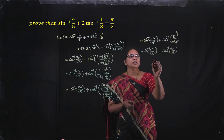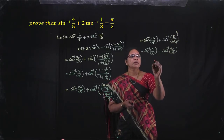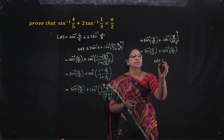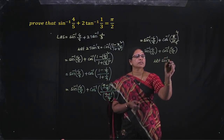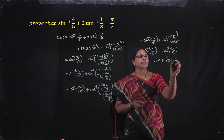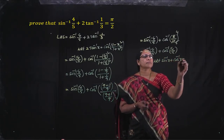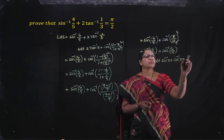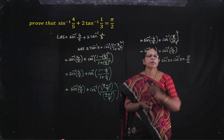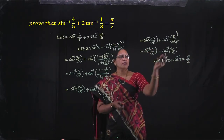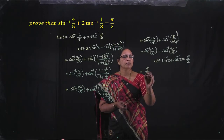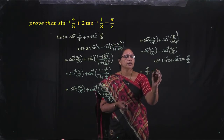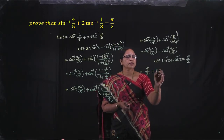We know the formula sin inverse x plus cos inverse x is π by 2. The expression is now in the form sin inverse 4 by 5 plus cos inverse 4 by 5, which equals π by 2. That is the RHS.